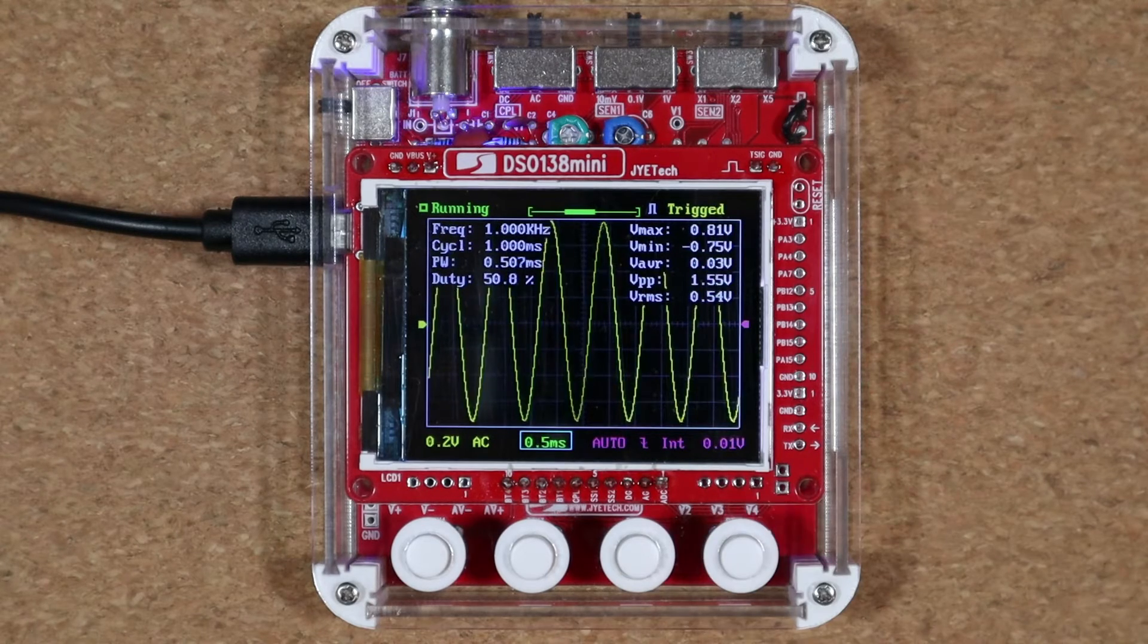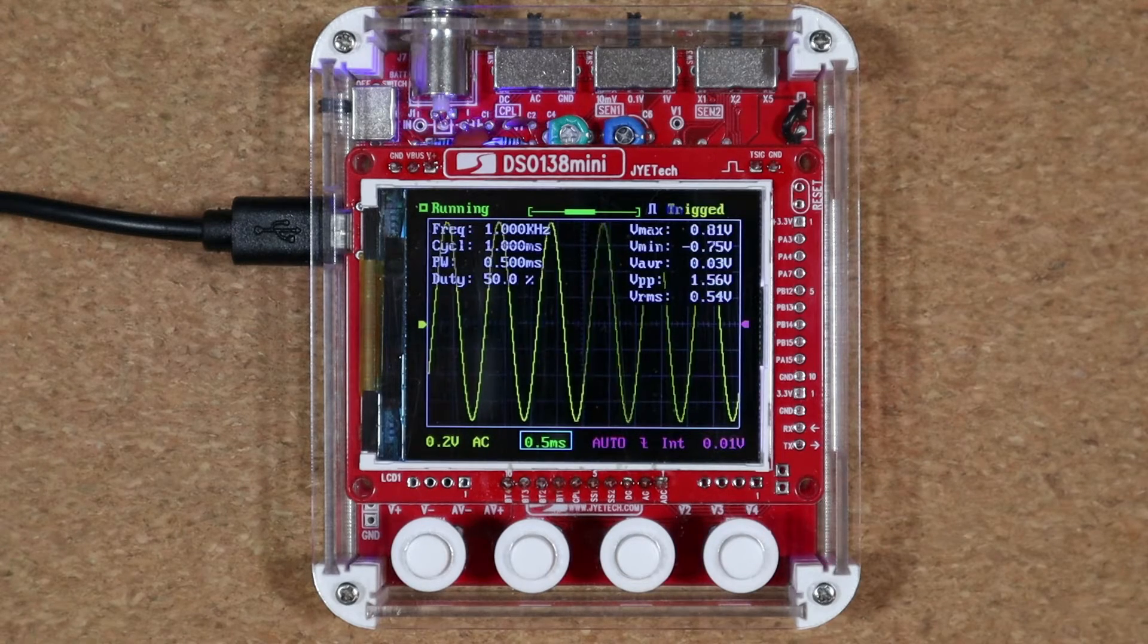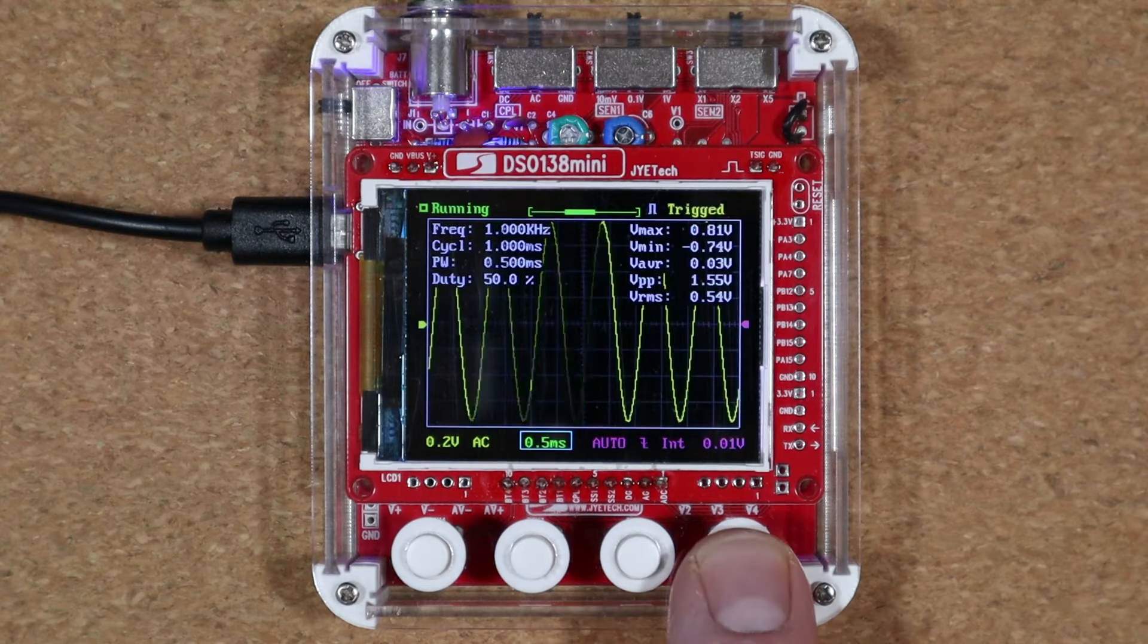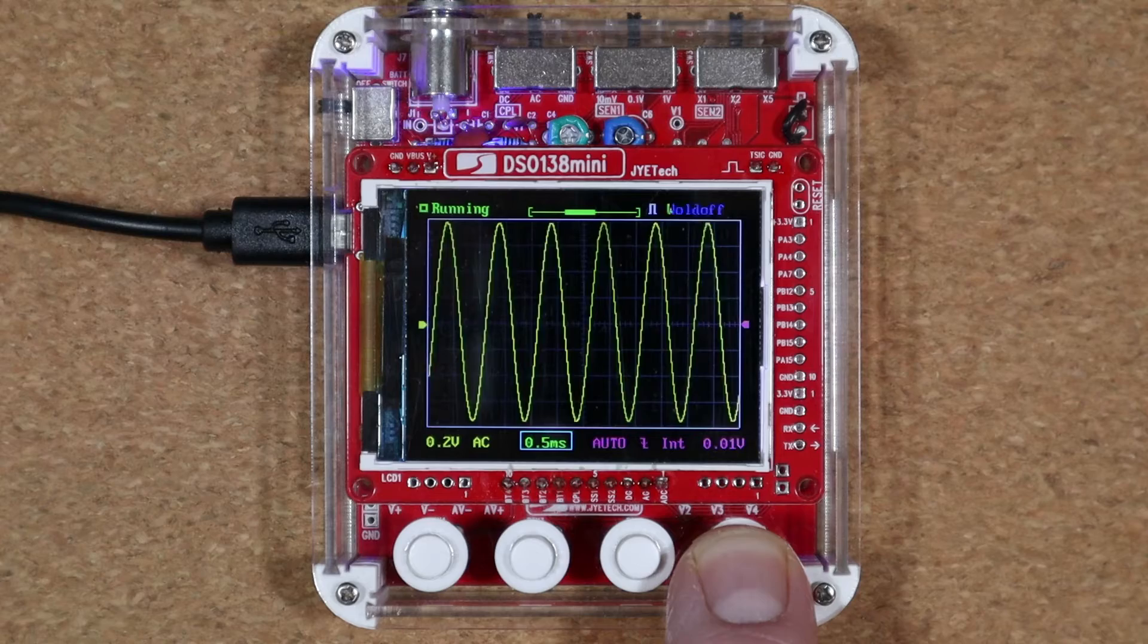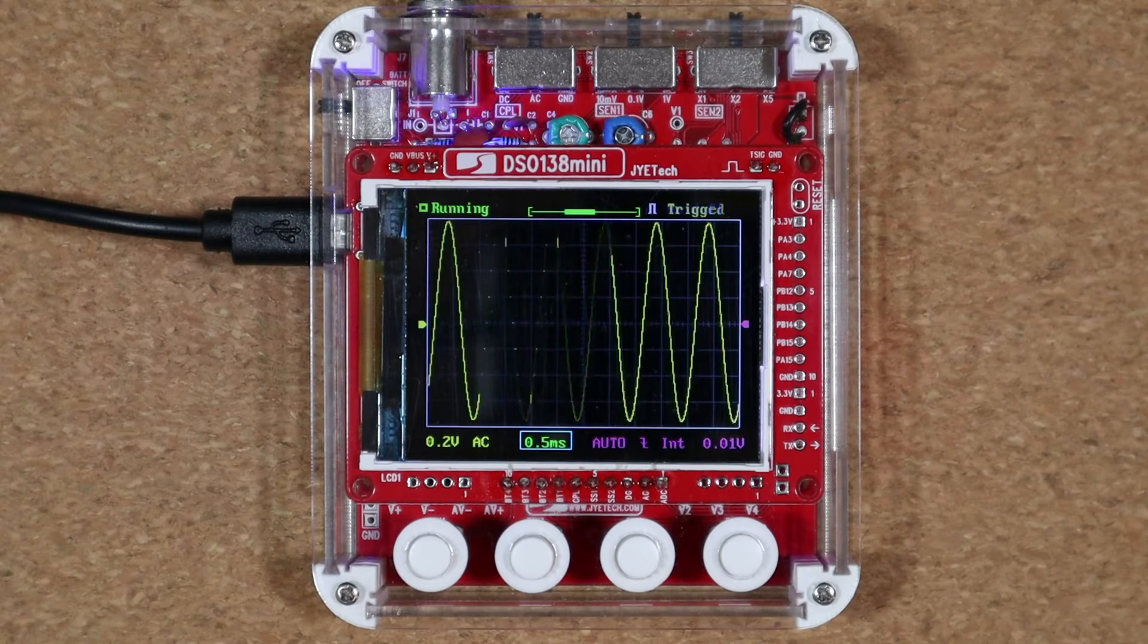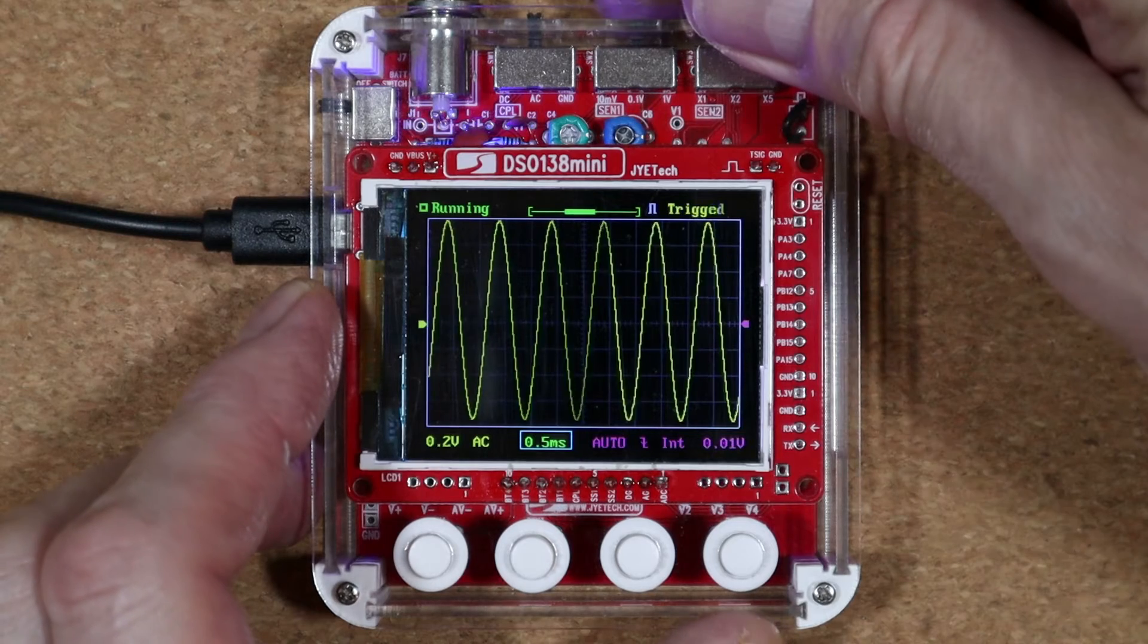I've found that when connected to a signal generator, I could use the oscilloscope to accurately calculate the frequency of the signal, and the manual, that A4 sheet of paper, states that the error in voltage measurement is under 5%. Not record breaking, but not bad for an oscilloscope of this price.